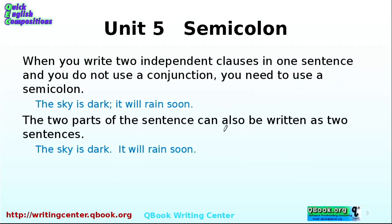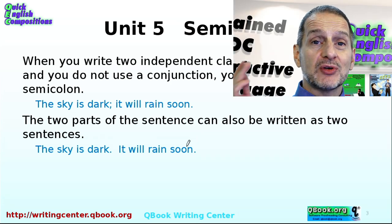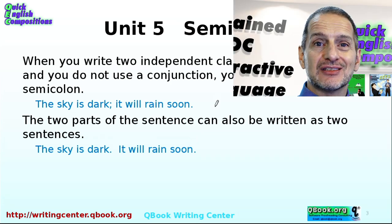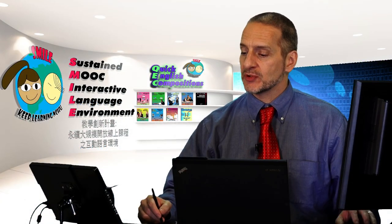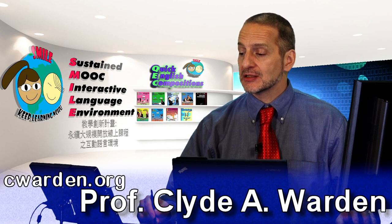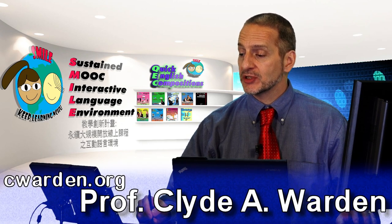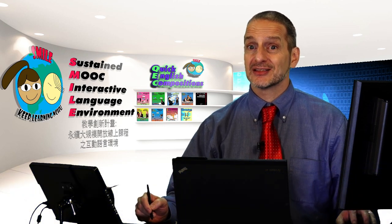Let's take a look at another example. The sky is dark; it will rain soon. That's the same as putting those two clauses into two sentences: 'The sky is dark. It will rain soon.' So you basically have two separate ideas in two sentences, each with a subject and a verb. But when we use the semicolon, we can put everything together into one sentence.